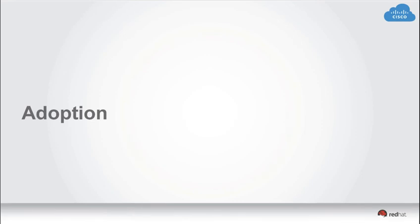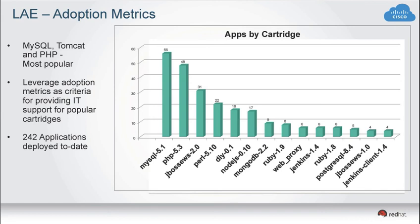I wanted to show adoption metrics — keep in mind these numbers are a couple of months old and have gone up quite a bit since. We released the environment in late January or February, and this data is from around March. There's quite a bit of interest in PHP and MySQL. PHP wasn't an IT-supported language runtime before LAE — neither was Node.js, Ruby, or MongoDB. You can see significant interest from application developers in these technologies, and the numbers have increased since. This adoption happened without us having to actively pursue application teams.